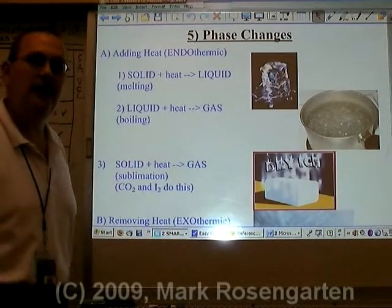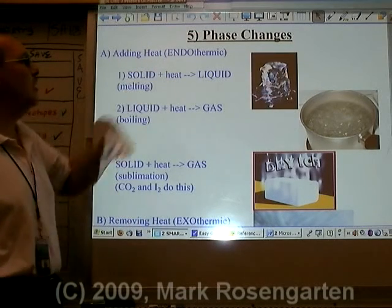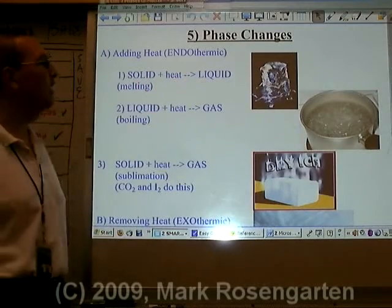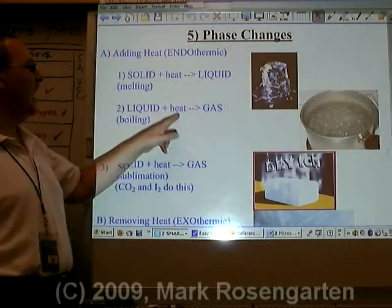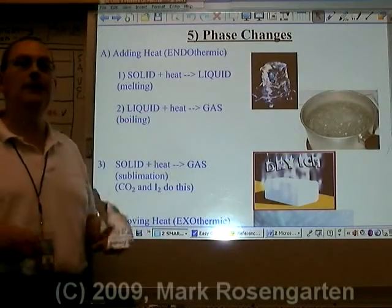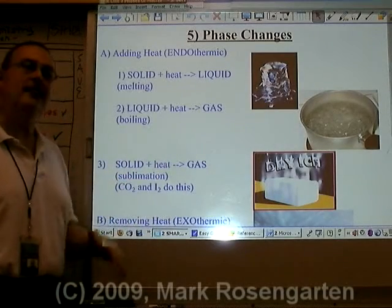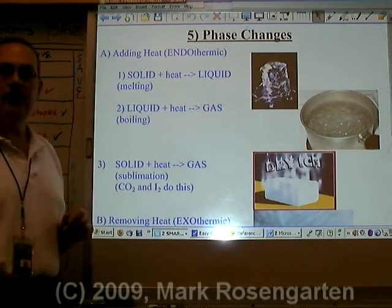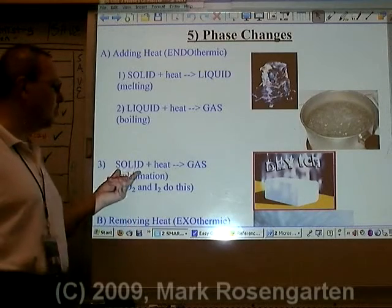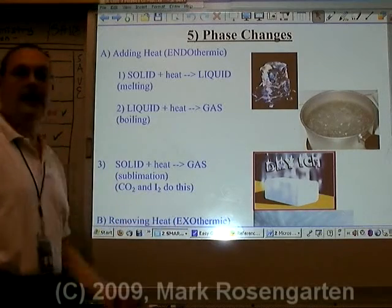Phases can change from one to another depending on whether you're adding or removing heat. Adding heat is endothermic. Adding heat to a solid turns it into a liquid — that's melting. Taking a liquid and adding heat turns it into a gas — that's boiling. Both are endothermic because they require the addition of heat. Solid plus heat turning directly into a gas is called sublimation, which is fairly rare. Carbon dioxide, known as dry ice, does this — it turns directly from solid to gas without becoming a liquid. Iodine also does this.